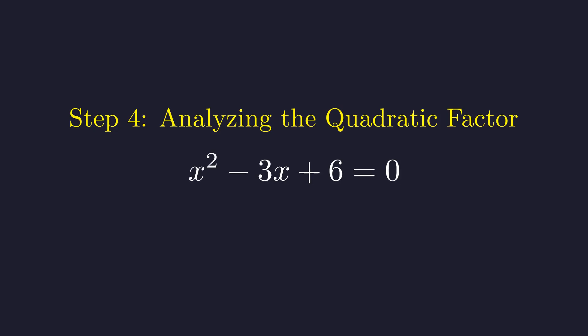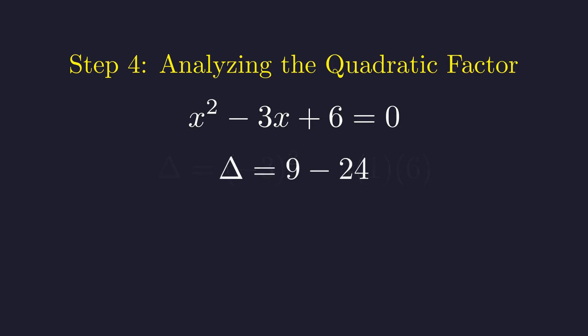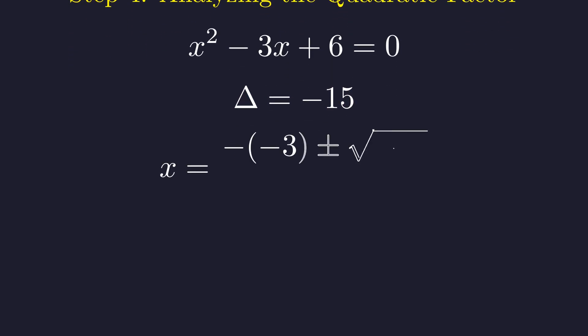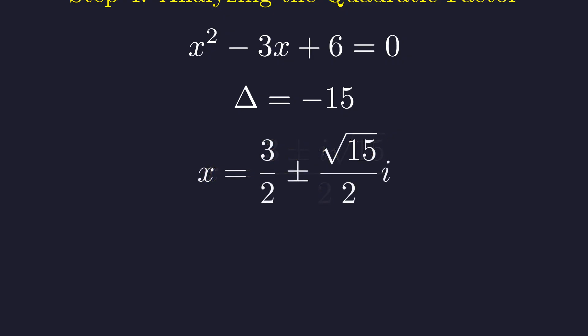First, we'll compute the discriminant to determine the nature of these roots. Substituting a, b, and c into the formula b squared minus 4ac, we evaluate the terms to get 9 minus 24. The discriminant is negative 15. A negative value means the remaining roots are a complex conjugate pair. Using the quadratic formula, we can find these complex roots explicitly: we simplify to get 3 plus or minus i times the square root of 15, all divided by 2.